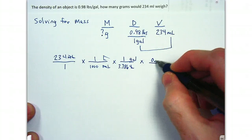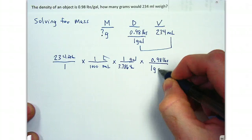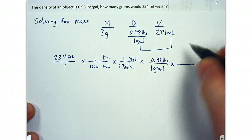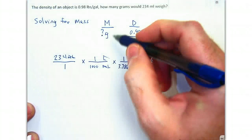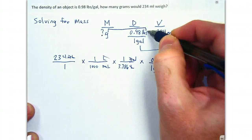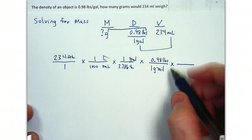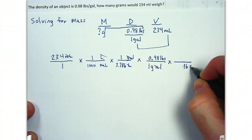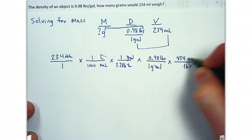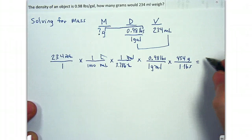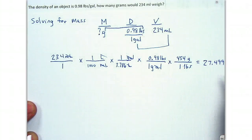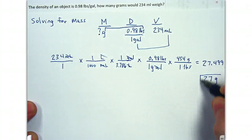We insert density: 0.98 pounds per gallon. Gallons cancel and now we're left with pounds. Since pounds and grams are both units of mass, we can transition to grams: 454 grams in one pound. We do the math and end up with 27.499 grams. Since there are only two significant figures in the problem, our answer is 27 grams.